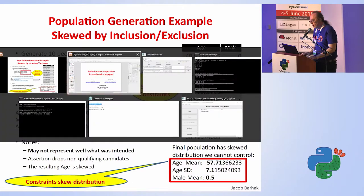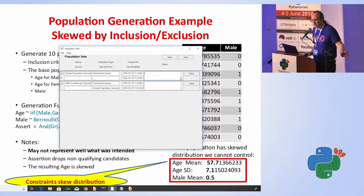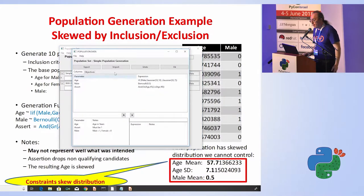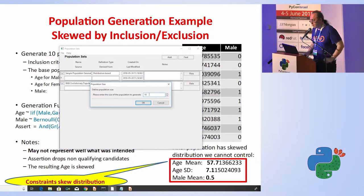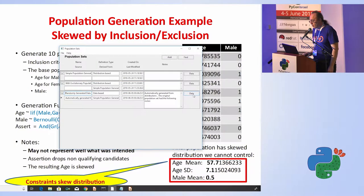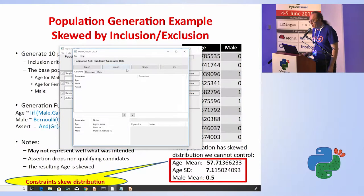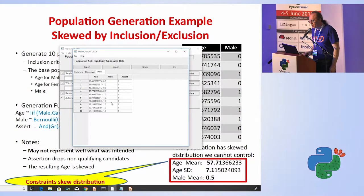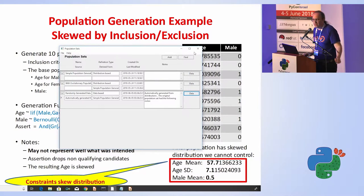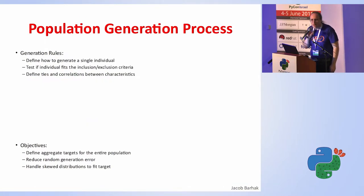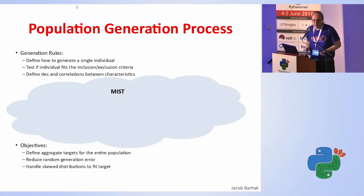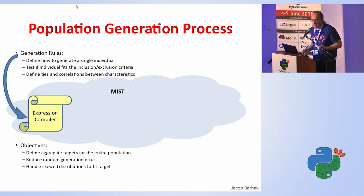Let me show you how we run this without evolutionary computation first. This is the micro simulation tool — MIST. I entered the equations, and when I run the simulation it generates some results. You can see it generated 70% men when I asked for 50% male. If I run it again, it will give something a little different. This is the first type of error. The second has to do with how you define the problem and all those inclusion-exclusion criteria.